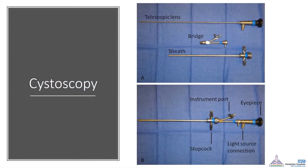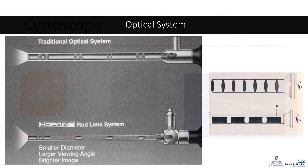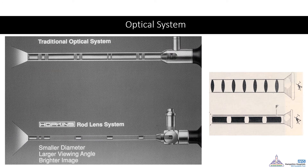The rigid cystoscopy set is a very important tool used in almost all endourology procedures. It requires a sheath, which comes in different sizes from the smallest up to 17, 22, and 24 French. A bridge is also used to allow insertion of guide wires and other small instruments, connected to a telescopic lens system. The sheath comes in diameters from 17 up to 25 French, with an average lens length of 30 cm. Traditionally the rod lens system was used, but this has been replaced in rigid scopes by the Hopkins rod system, in which lenses have a smaller diameter allowing clearer images.